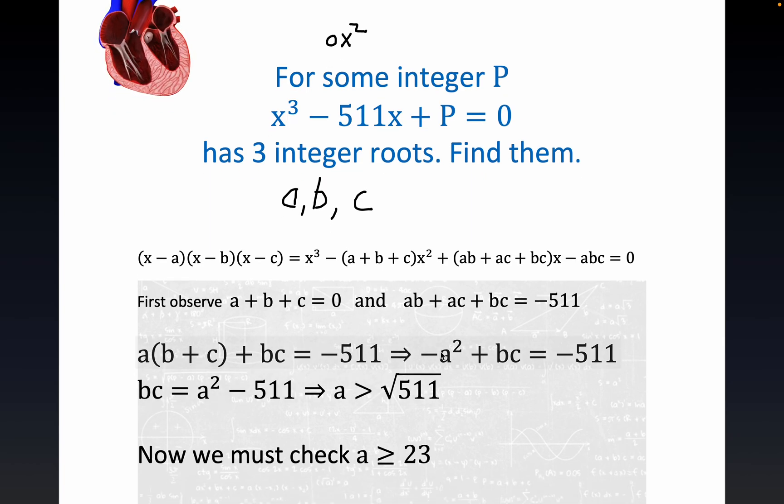What I did first of all was factor a out of the first two terms, that's where I got a times b plus c. And then you still have the bc sitting here. Now notice that we can write a times b plus c would be equal to a times minus a, because b plus c equals minus a from our very first condition.